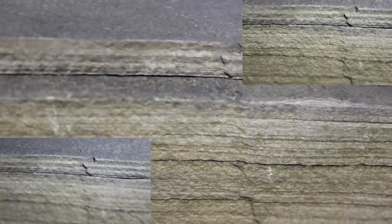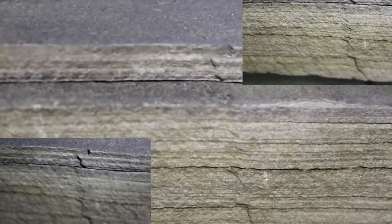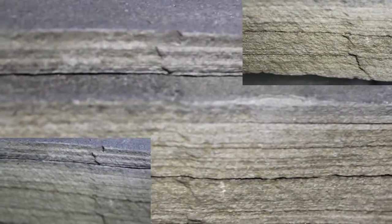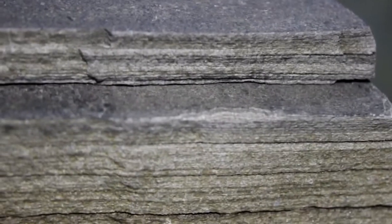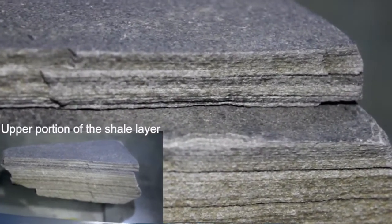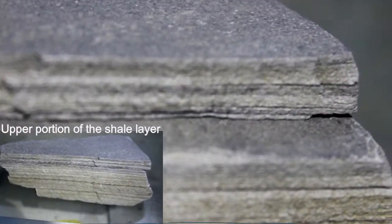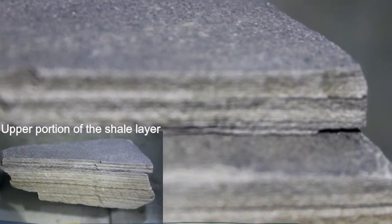It is a fine-grained clastic sedimentary rock composed of mud that is a mix of flecks of clay minerals and tiny fragments, silt-sized particles of other minerals, especially quartz and calcite.